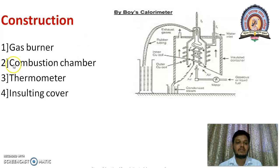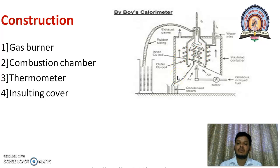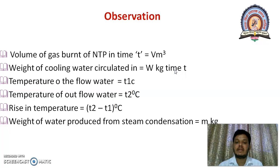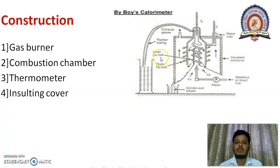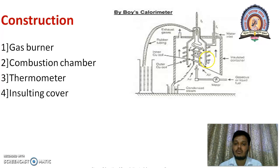The second part is the combustion chamber. The whole assembly is covered with the combustion chamber. In the combustion chamber, two different copper tubing coils are present: the inner copper tubing coil and the outer copper tubing coil. Water enters from the top of the assembly and moves down to the bottom with the help of the outer tubing coil, and exits from the top of the assembly with the help of the inner copper tubing coil.